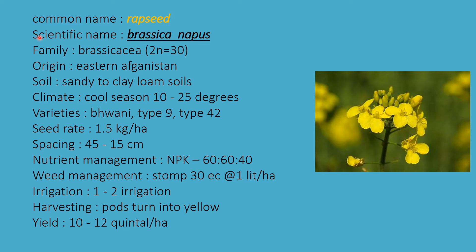The oil seed crop rapeseed has scientific name Brassica napus, family Brassicaceae. Chromosome number 2n = 30, origin Eastern Afghanistan. Soil required is sandy to clay loamy, and climate is cool season, 10 to 25 degrees. Varieties are Bawani, Type 9, and Type 42. Seed rate is 1.5 kg per hectare, and spacing is 45 × 15 cm from row to row and plant to plant.